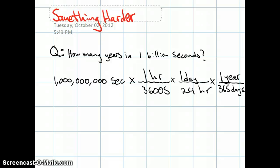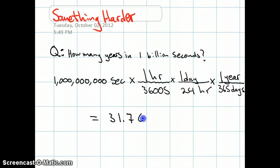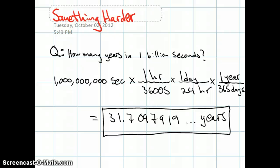And if you punch that into your calculator, the answer it will spit out at you is 31.7097919, and on and on. So by the time you're 32 years old, you're already over a billion seconds. Of course, the unit of our answer is in years.